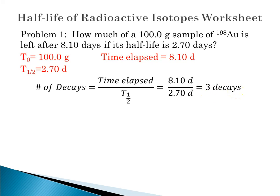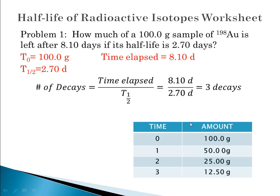That means that three different decays took place and each time a decay took place, half of the sample went away. So that means we have to set up our little chart. I've set it up for you. The table with time and amount. At time zero, there was 100 grams.